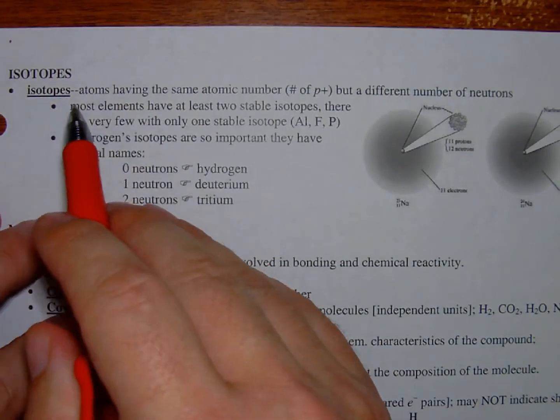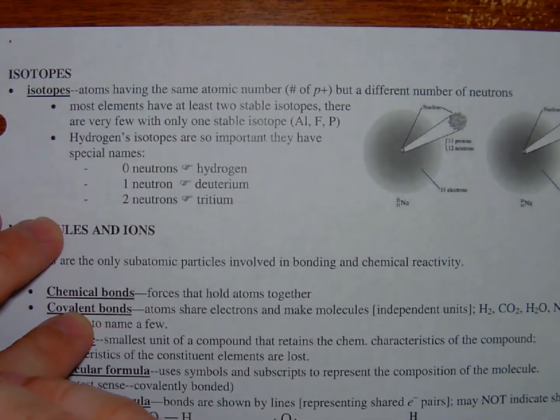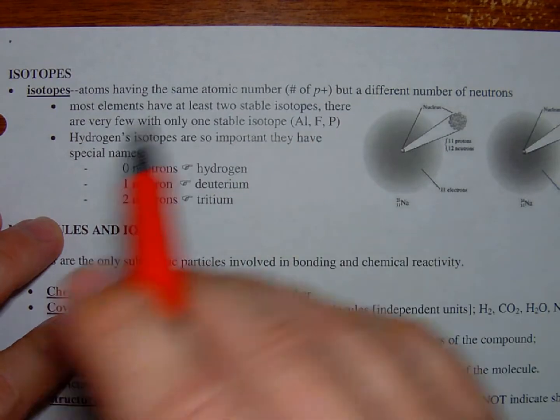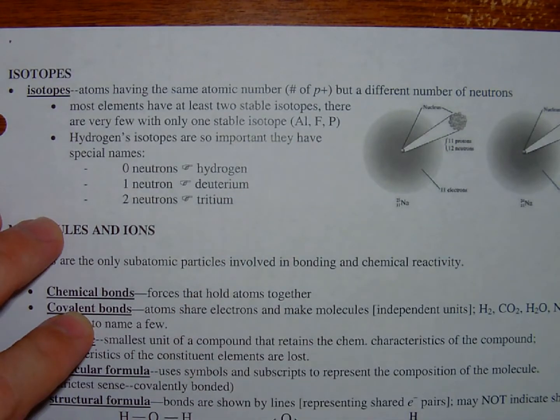Isotopes. Quick reminder about isotopes. Isotopes are atoms having the same atomic number. Remember, that means the number of protons, but they have a different number of neutrons.